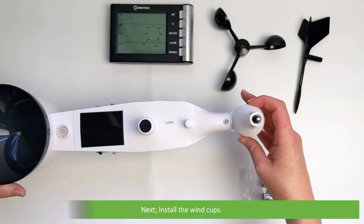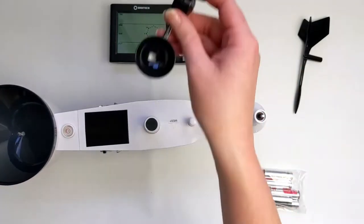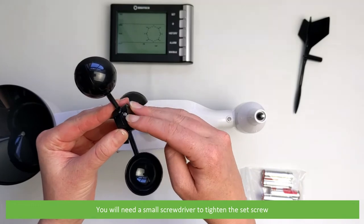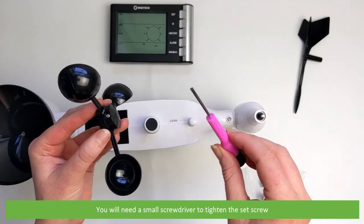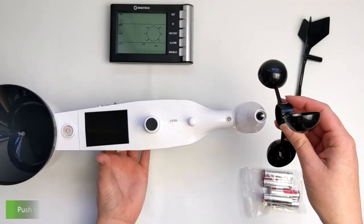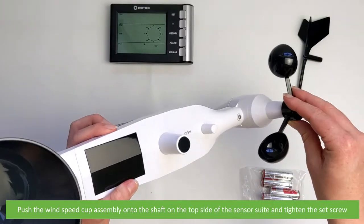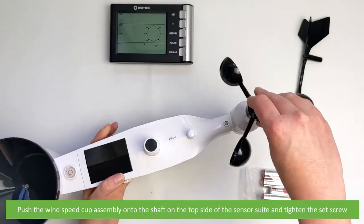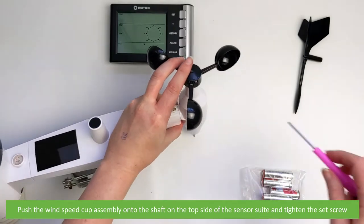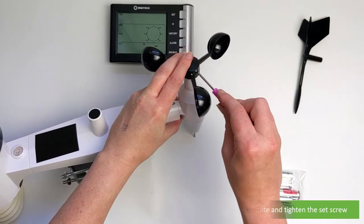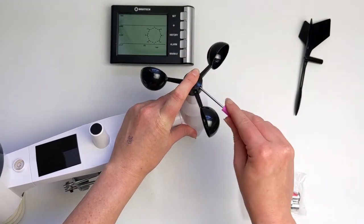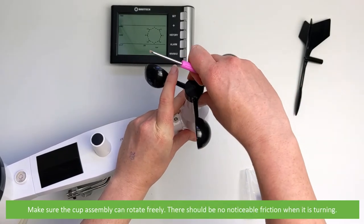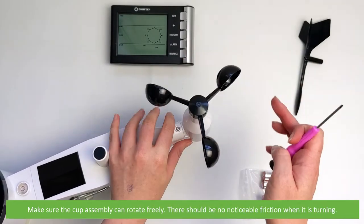Next, install the wind cups. You will need a small screwdriver to tighten the set screw. Push the wind cup assembly onto the shaft on the top side of the sensor suite and tighten the set screw. Make sure the cup assembly can rotate freely. There should be no noticeable friction when this is turning.